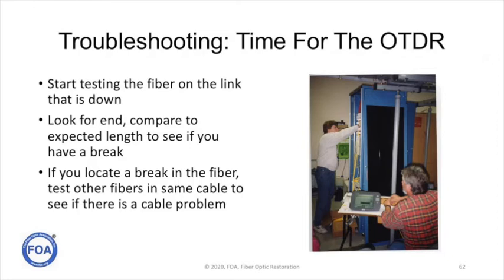You start testing the link that's down. You access the fiber on the link that's the problem and look for the OTDR trace — look for the end, see if the length is the link you expect. And if it's not, is it showing you a break? If you locate a break in the fiber, test other fibers in the same cable to see if there's a cable problem. If it's only one problem, it's likely in a splice closure or a patch panel. If it's all the fibers in the cable, then you have a problem that's likely to be cable damage.